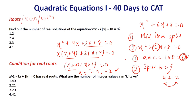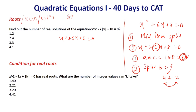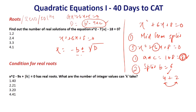The same quadratic can also be solved through the discriminant method. You should use the discriminant where roots can't be found by middle term splitting. For any quadratic ax² + bx + c = 0, the discriminant is given as D = b² − 4ac. The roots are given as x = (−b ± √D) / (2a), where 2a is twice the coefficient of x².